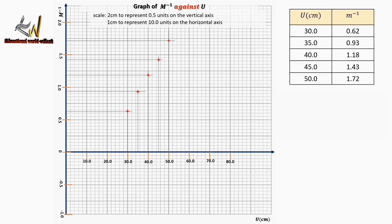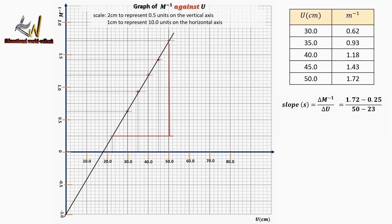We join these points with a very straight line — that's the line of best fit. The graph cuts both the vertical axis and the horizontal axis. For the slope, we take a convenient right-angle triangle drawn on the graph and read off the values to the axes. The slope is the change in the vertical axis over the change in the horizontal axis: 1.72 minus 0.25 divided by 50 minus 23, which simplifies to 1.47 divided by 27.